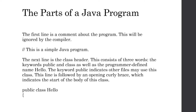The next line is going to be the class header. Whenever we create a class in Java, that consists of two parts: the header and the body. The class header consists of three words: the two keywords public and class, which are reserved by Java, and then the programmer-defined name - hello. The keyword public indicates that other files may use this class. Eventually, we'll get into more complex programs that use multiple files, and at that point we'll see more relevancy with this public keyword.